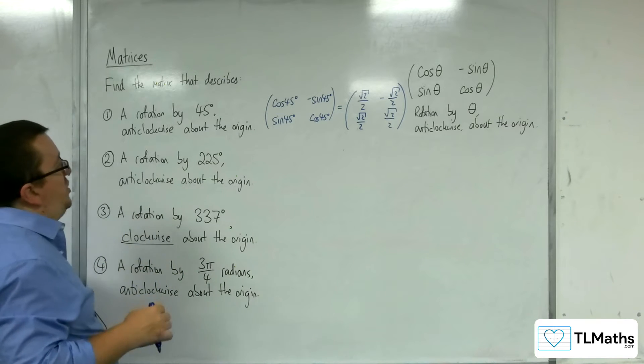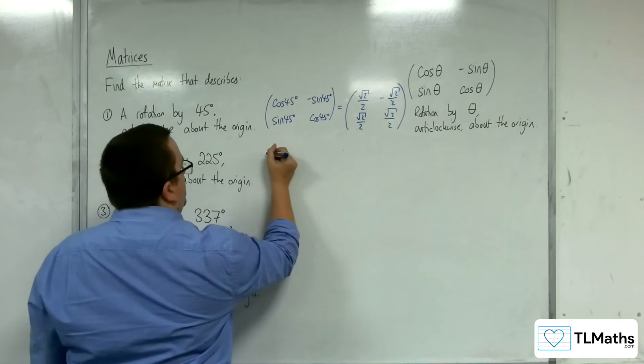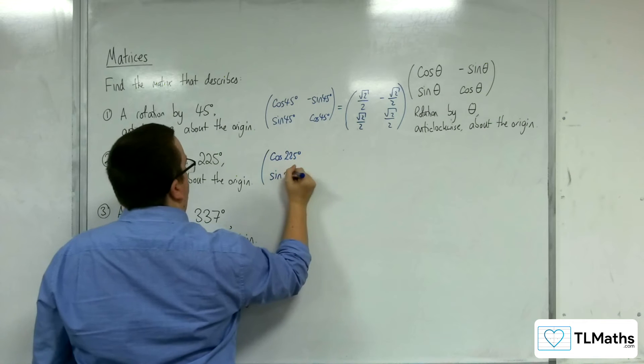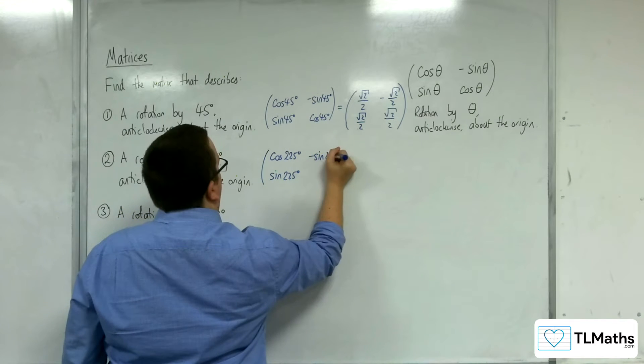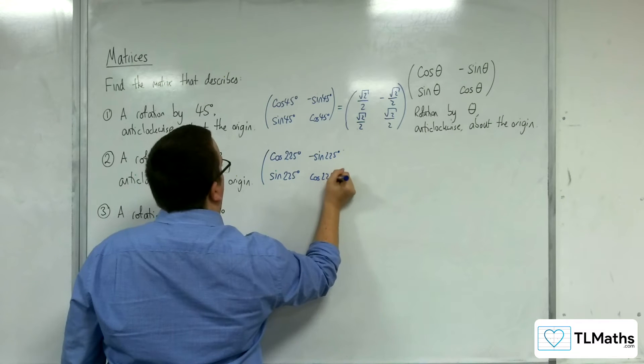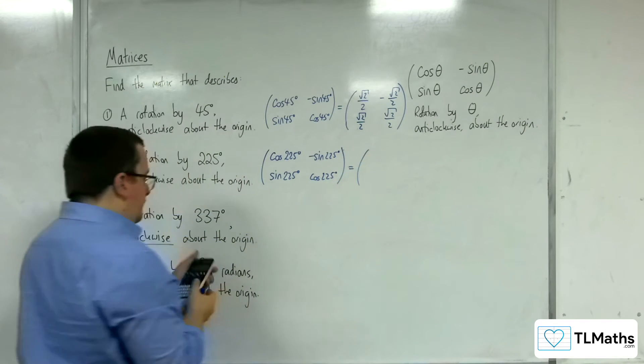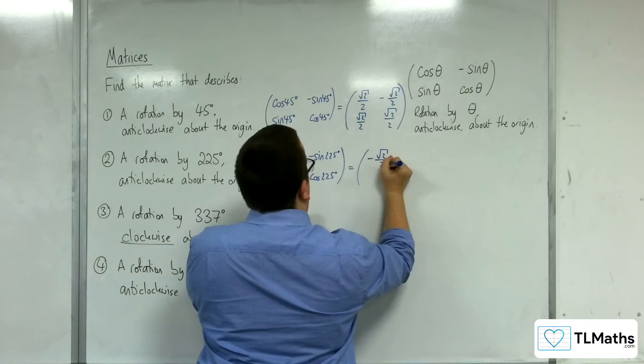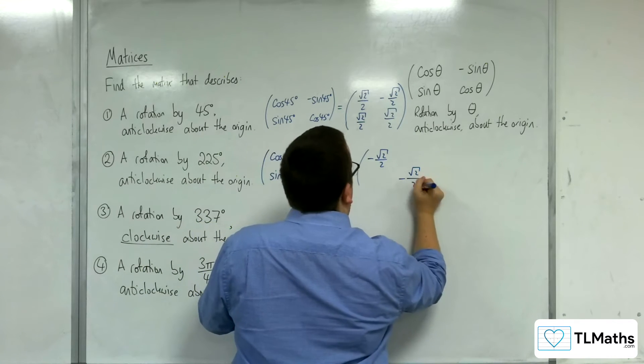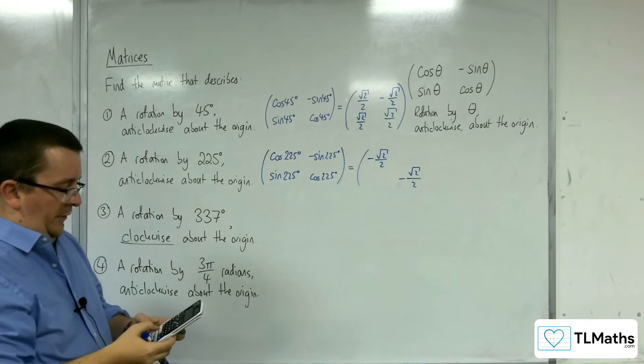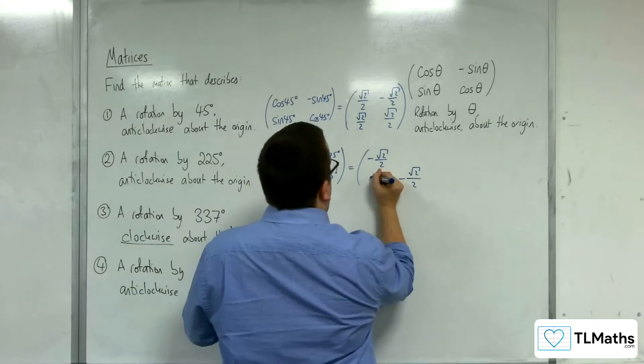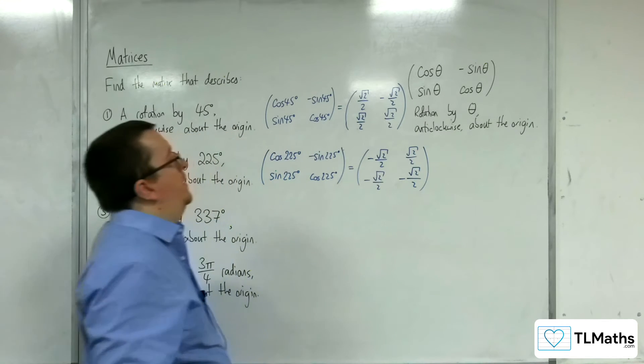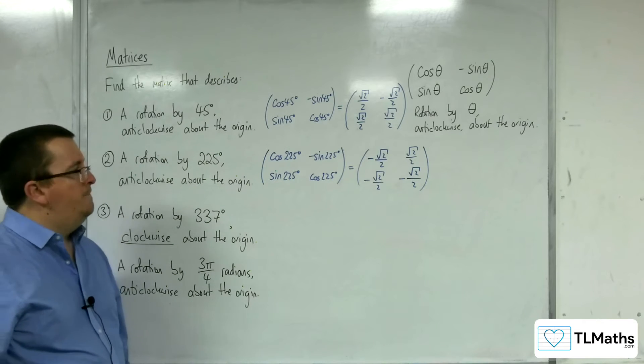Number two, a rotation by 225 degrees anticlockwise about the origin. Well, it's the same deal. So cosine of 225, sine of 225, negative sine 225, and cosine of 225. So cosine of 225 is negative root 2 over 2, that takes care of the top left and bottom right. And sine of 225 is negative root 2 over 2 as well. And so this would be your matrix.